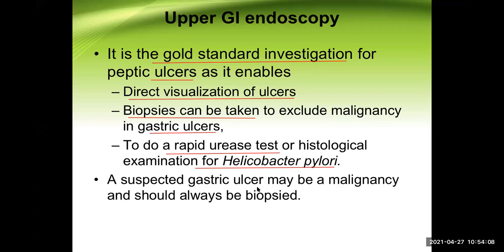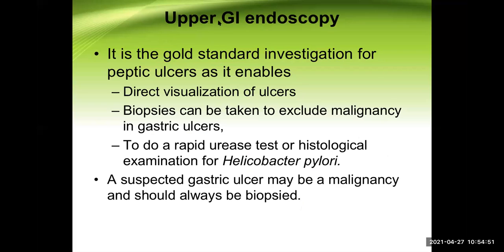A suspected gastric ulcer may be malignant and should always be biopsied. Suspicious features include: large size, heaped-up or elevated margins, irregular edge, and large radiating folds — hallmarks of malignant ulcer. Upper GI endoscopy can also be therapeutic — for example, if the peptic ulcer is bleeding, endoscopic methods can be used to stop the bleeding.